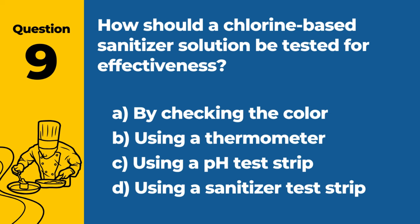Question 9: How should a chlorine-based sanitizer solution be tested for effectiveness? A. By checking the color. B. Using a thermometer. C. Using a phage test strip. D. Using a sanitizer test strip. Answer: D. Using a sanitizer test strip. The effectiveness of a chlorine-based sanitizer solution should be tested using a sanitizer test strip to ensure it has the proper concentration.